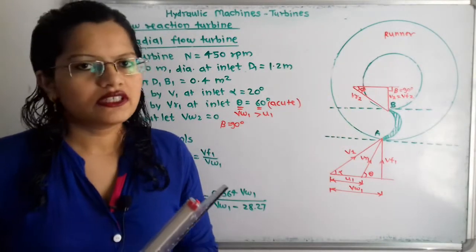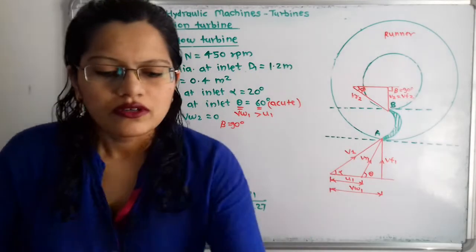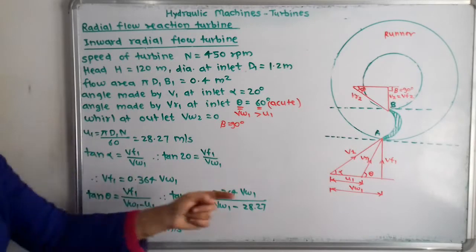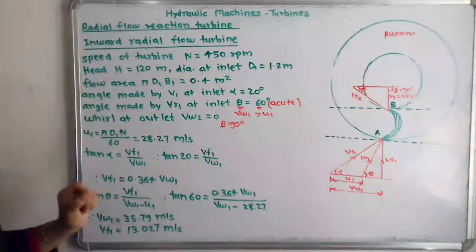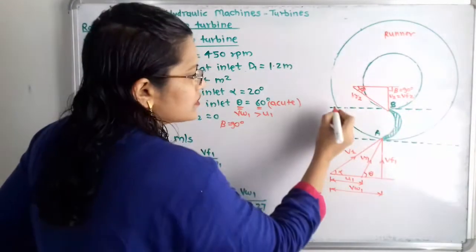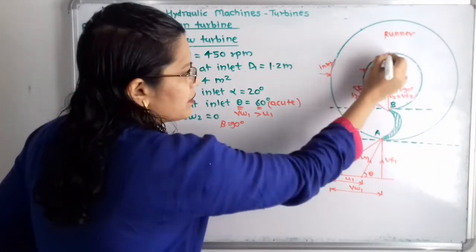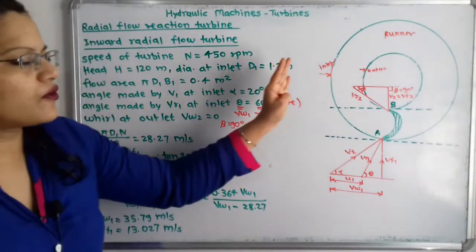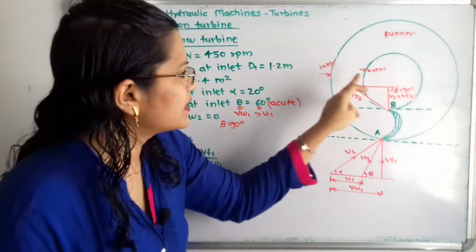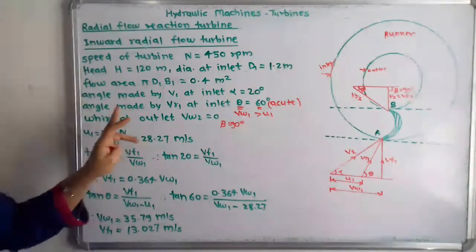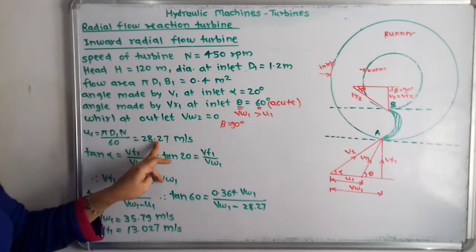Now we calculate u1 using the formula u1 = π·d1·N / 60. Substituting d1 = 1.2 m and N = 450 rpm: u1 = π × 1.2 × 450 / 60, which gives u1 = 28.27 m/s.